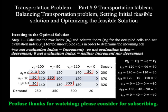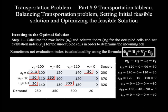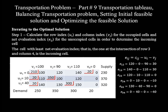The solution is optimal only when all net evaluation index values are greater than or equal to zero. Since e24 and e34 are negative, the solution is not yet optimal. The cell with the least net evaluation index — at the intersection of row 3 and column 4, with a value of negative 40 — is chosen as the incoming cell. One currently occupied cell must then be chosen as the outgoing cell, so we proceed to step 2.